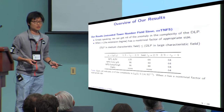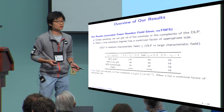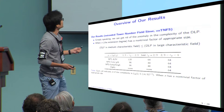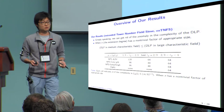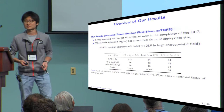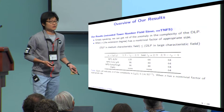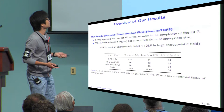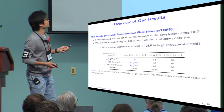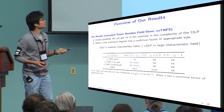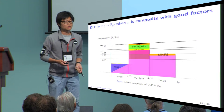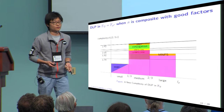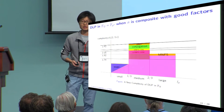In other words, we can show that DLP in the medium characteristic case is easier than DLP in the large characteristic case, when the extension degree is a composite with a factor of appropriate size. As you can see from the table, our result reduces the complexity in the medium case. By applying our EXTNFS with the JLSV algorithm, we obtain the same complexity in the medium case as in the large characteristic case.